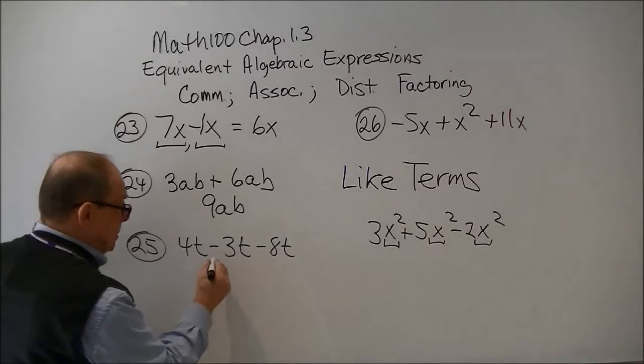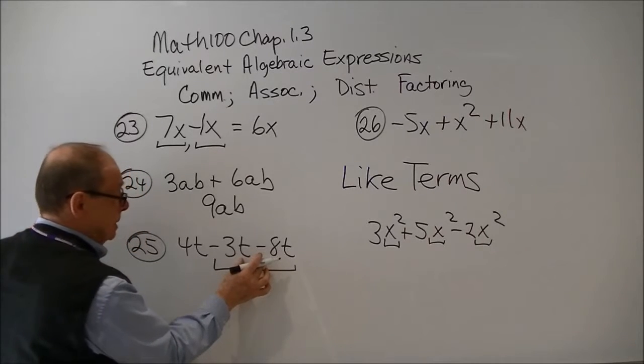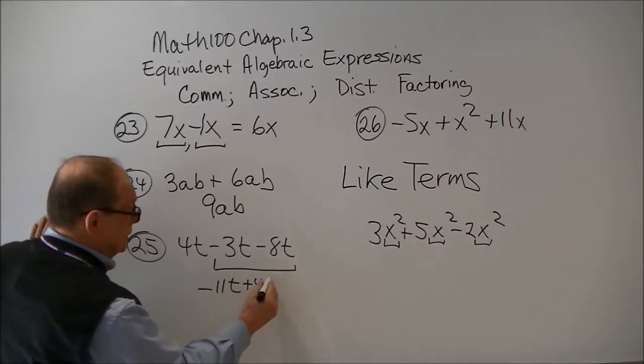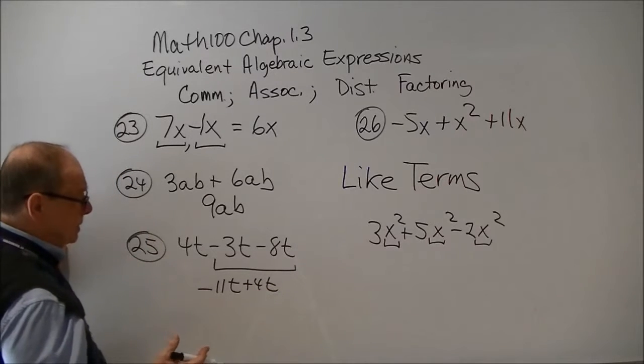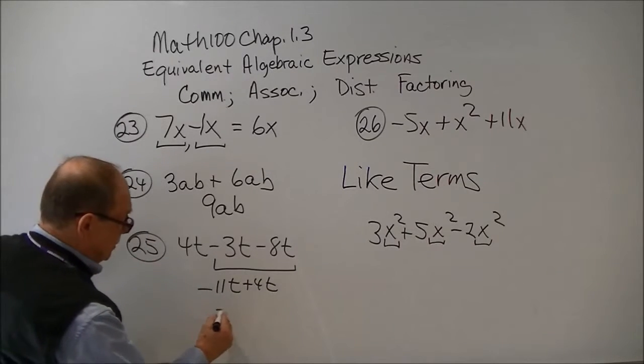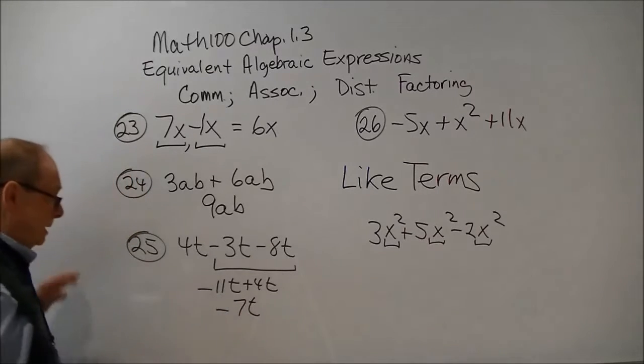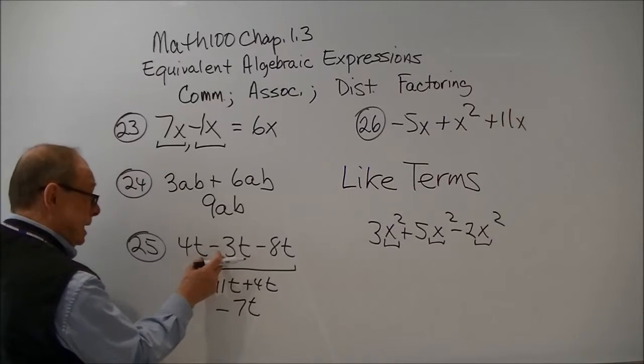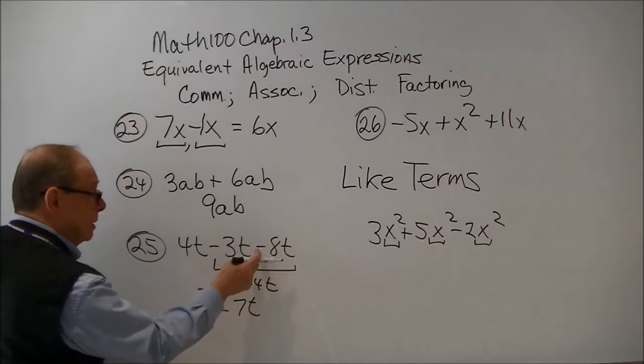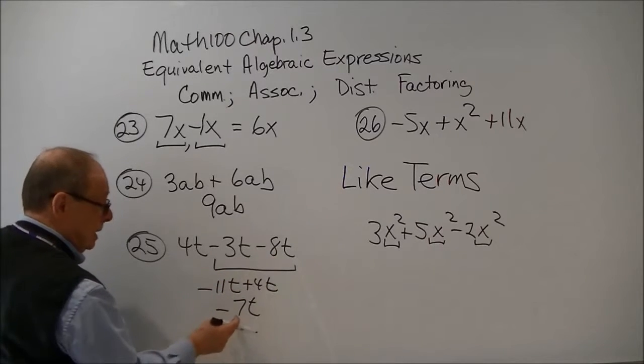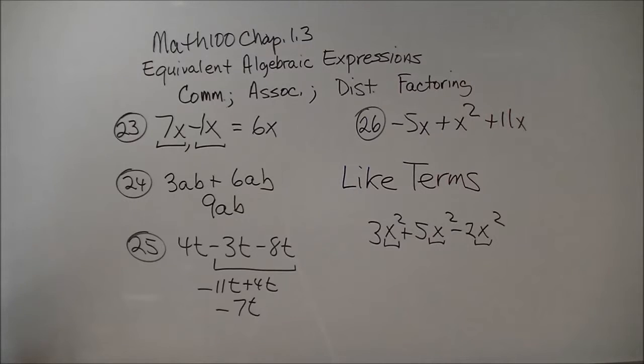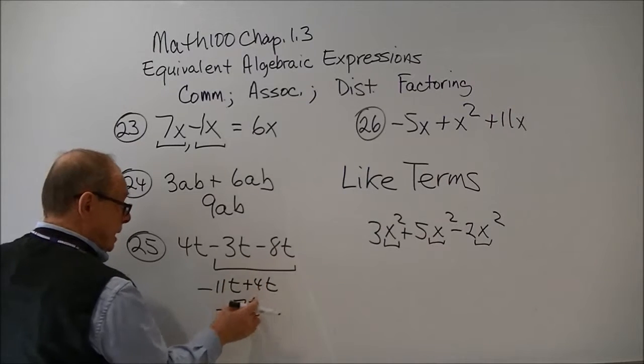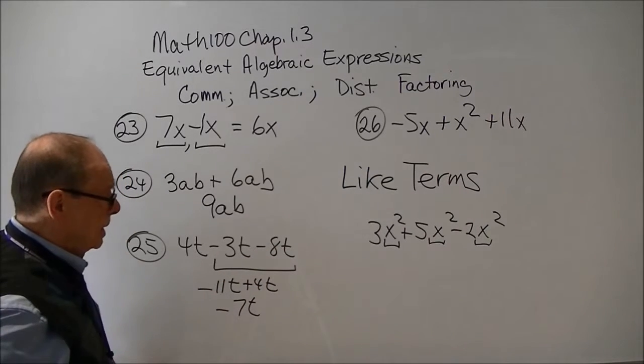And here's a case where you may want to combine your negatives first. This gives you a negative 11t plus 4t. And some of this you can do mentally. This is going to give you a negative 7t. And you could have done it this way. This gives you a negative 3 from 4 is 1t. 1t from a negative 8, a negative 7t. But again, the idea that you can do this first, associate these two, and then do the other. Probably a good idea.